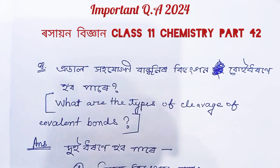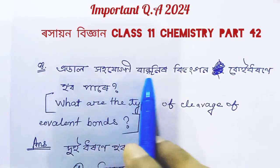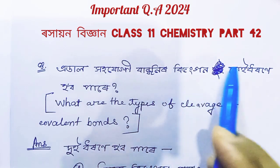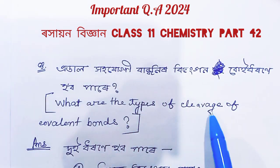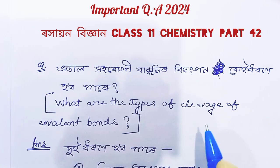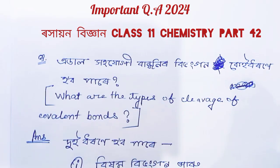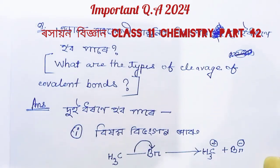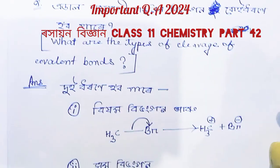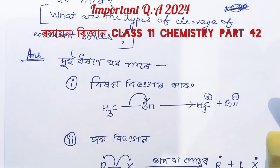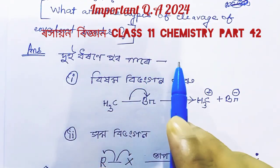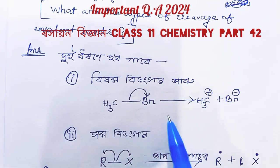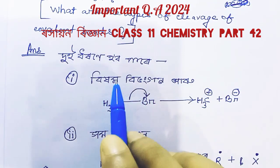I am so excited to be among you. The first question I will ask is: what are the types of cleavage of covalent bonds? If the cleavage of a covalent bond is the result of covalent bond cleavage, how does the cleavage of a covalent bond occur?